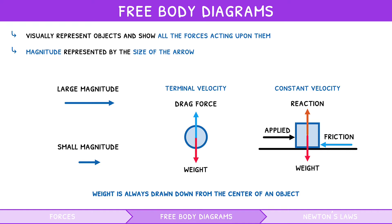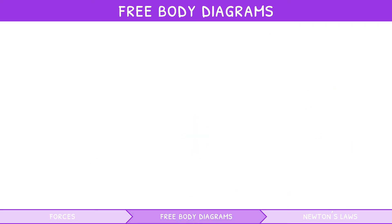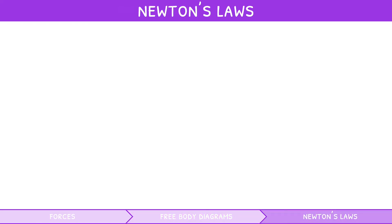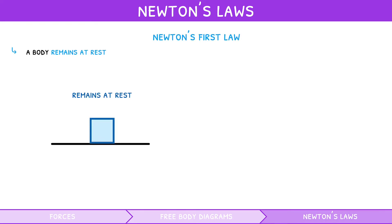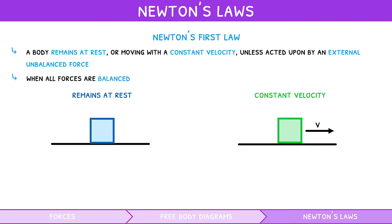But what determines how these forces interact with objects? Isaac Newton came up with three basic principles that govern mechanics, called Newton's laws. Newton's first law states that a body remains at rest, or moving with a constant velocity, unless acted upon by an external unbalanced force. In other words, when all forces on an object are balanced and cancel out to zero, it remains in this state, termed equilibrium. If an object is at equilibrium, the sum of all forces on it equals zero.